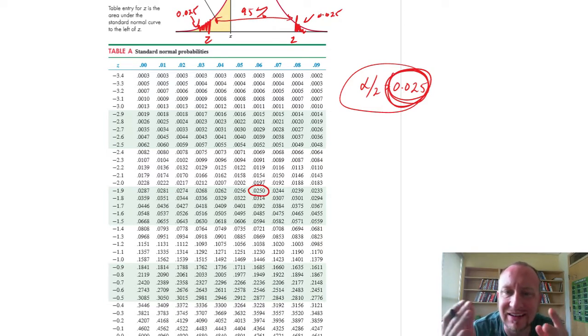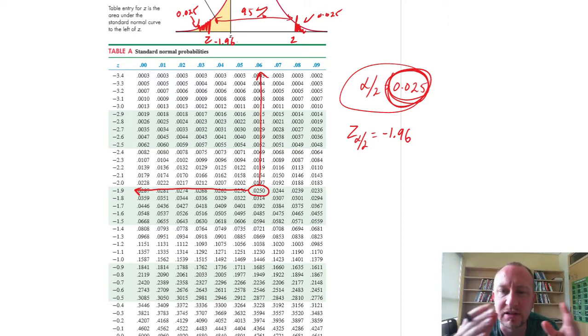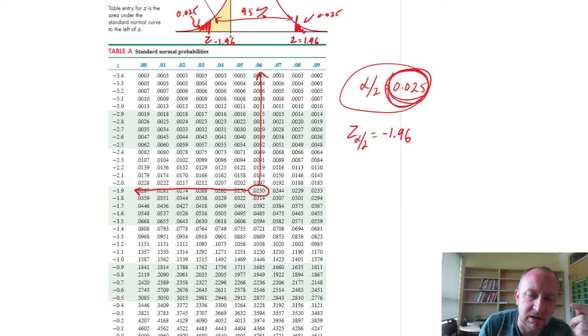And so once I've got that probability, now I come out this way, and I see, when I want to figure out what the z value is, that's a negative 1.9, and then the second decimal place is up here, so that's 1.96. So this is negative 1.96, and because the distribution is perfectly symmetric, I know that this value is just positive 1.96. So that gives me our critical value that we need for this calculation.